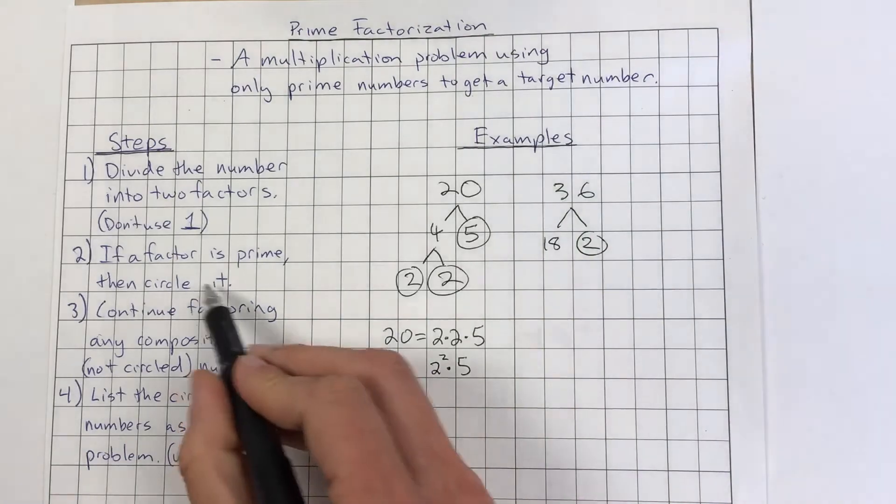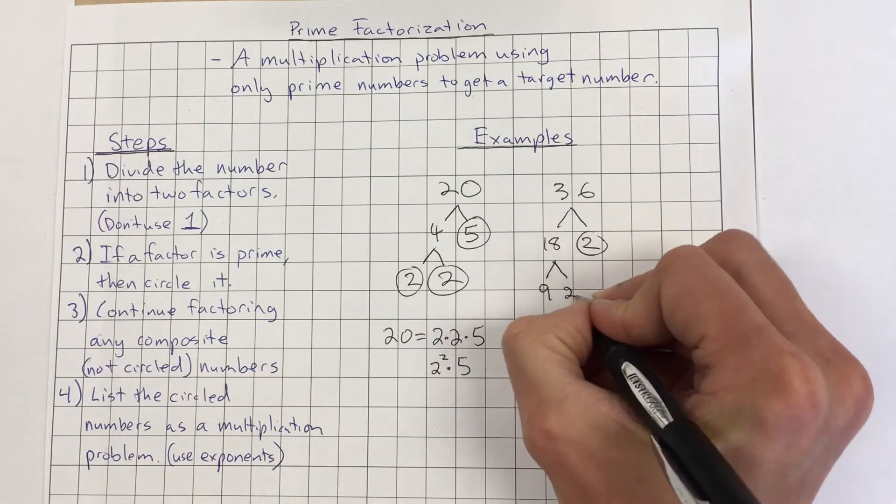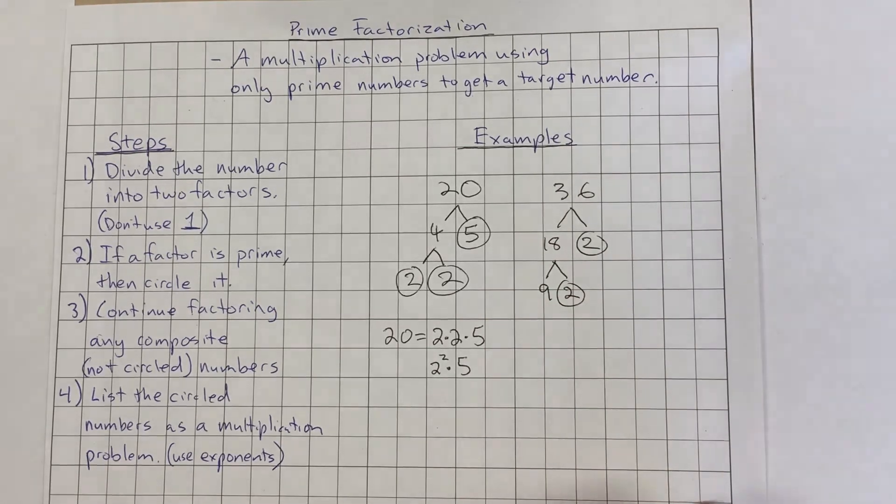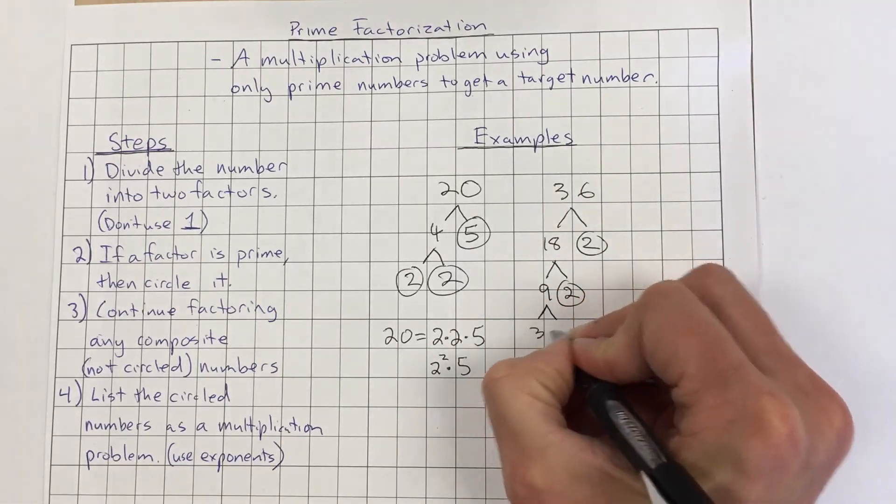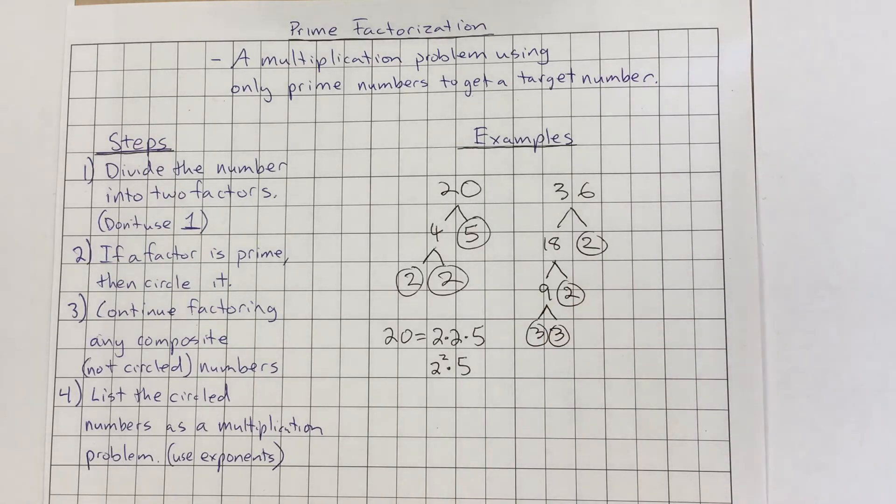Circle the prime number, right? And we're going to keep factoring this composite number. We could say 9 and 2. We can circle that 2. Keep factoring. We get 3 and 3. We no longer have anything left to factor.